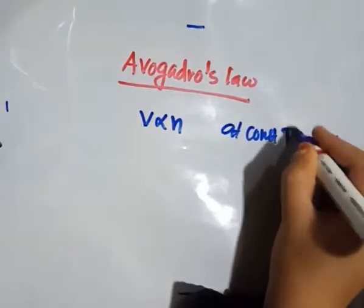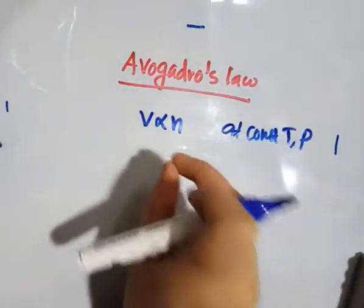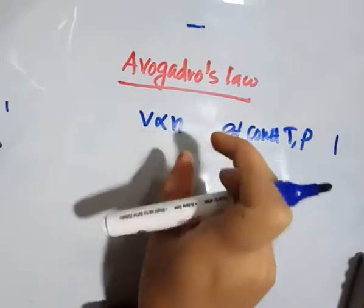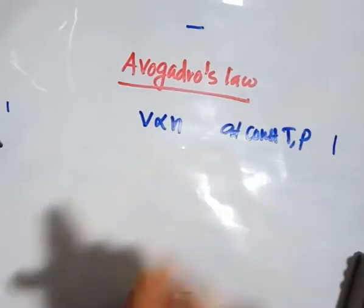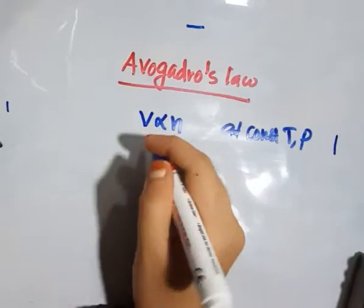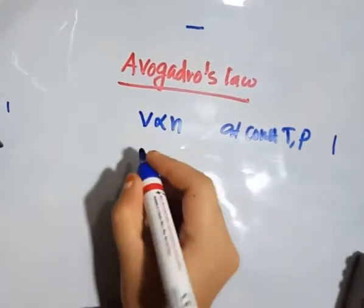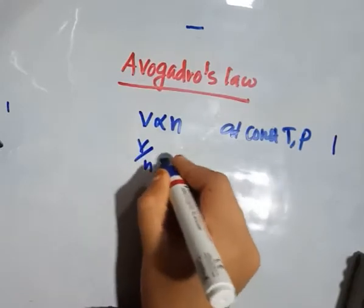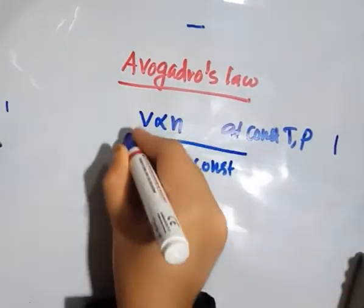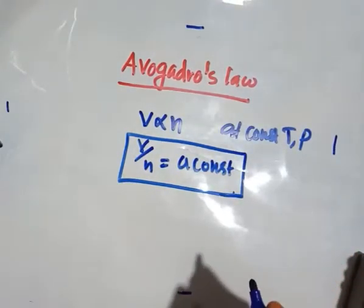At constant temperature and pressure, the volume is proportional to the number of moles. The proportionality gives us V is equal to a constant times n, so V by n is equal to a constant. This is Avogadro's law.